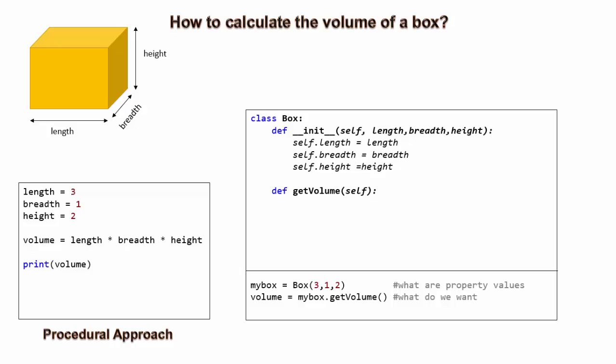But wait a minute. We did not provide any property value. It is calculated internally from the primary properties. Such a property is known as derived property. What do we want to do with the result? We want to print.